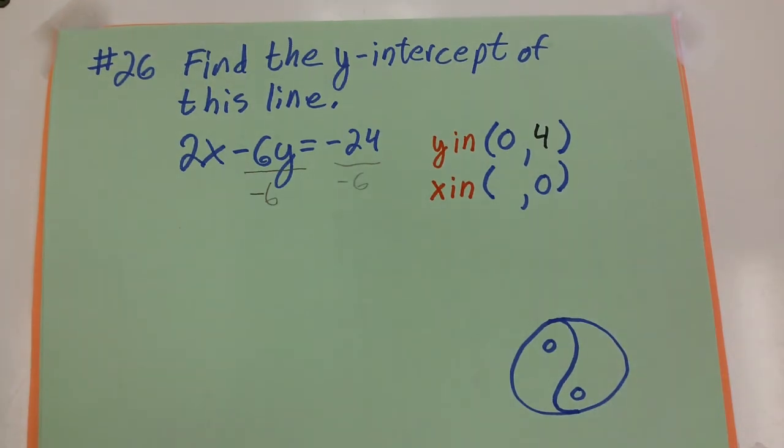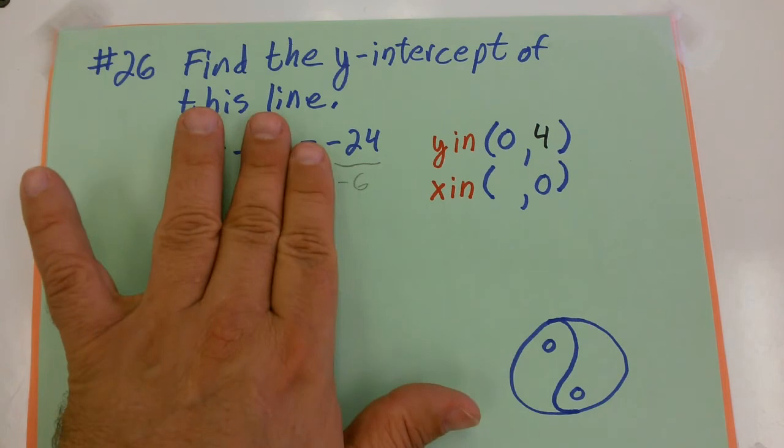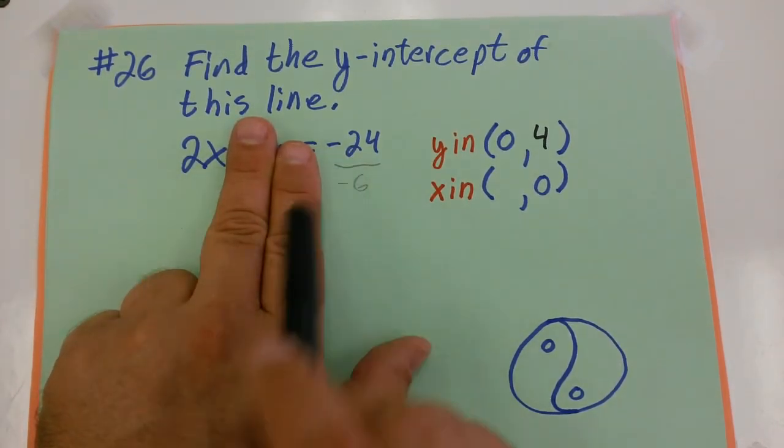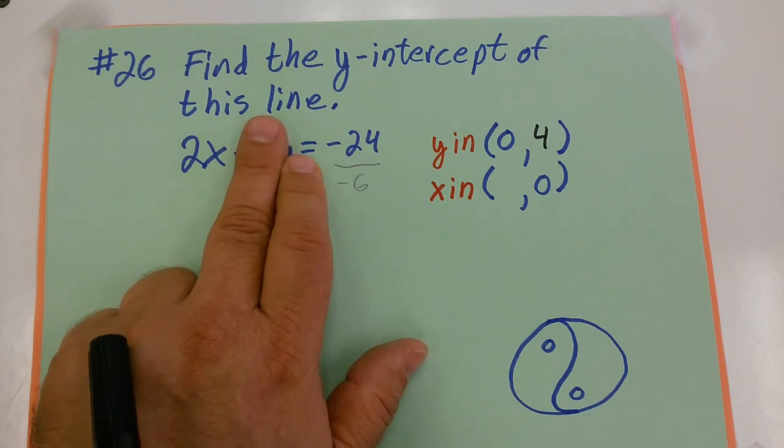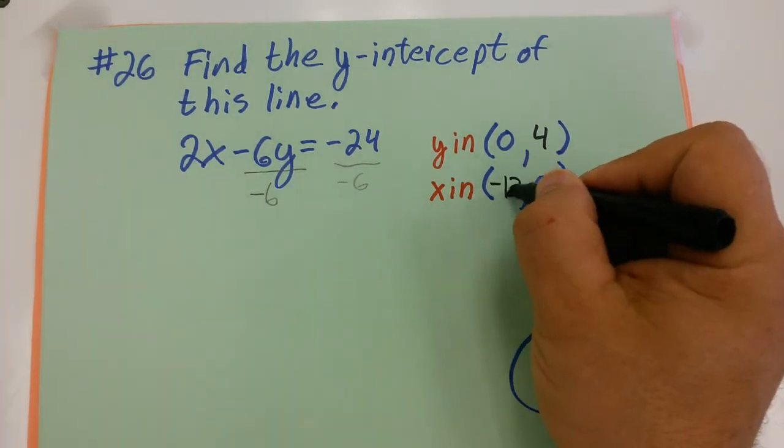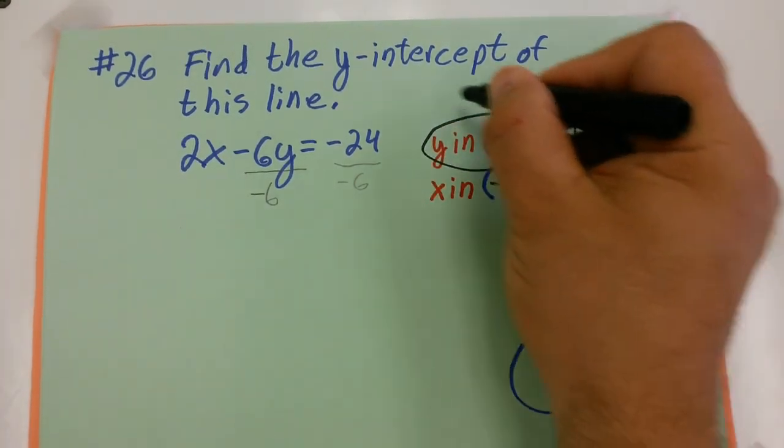If I wanted to find the x-intercept - I know it doesn't ask me to - I would cover up the y-value. That would give me 2x equals negative 24, which gives me the answer of (-12, 0) for the x-intercept. But this one's just asking for the y-intercept.